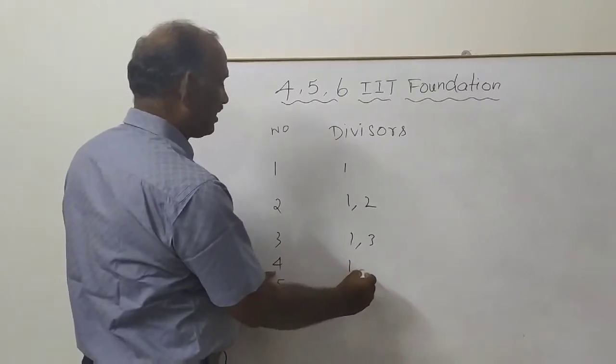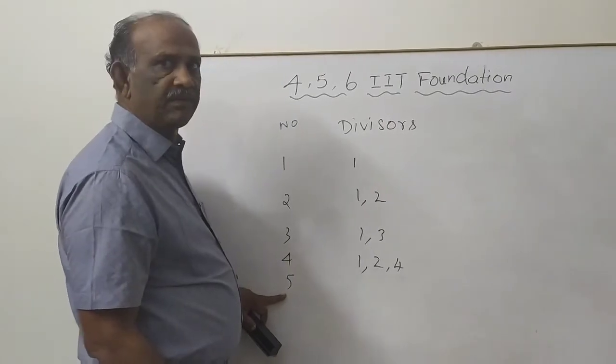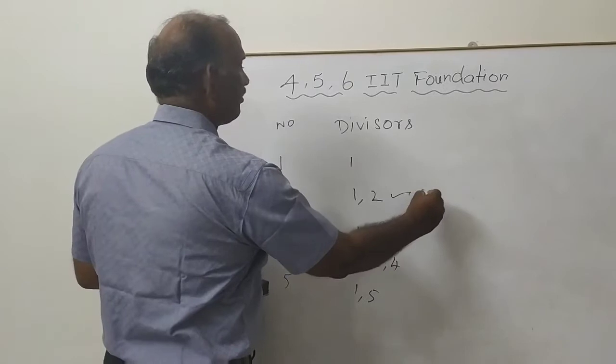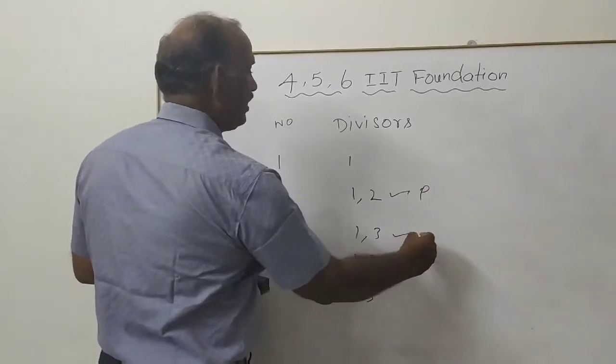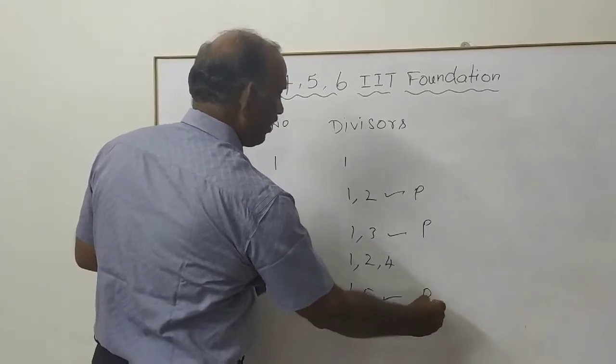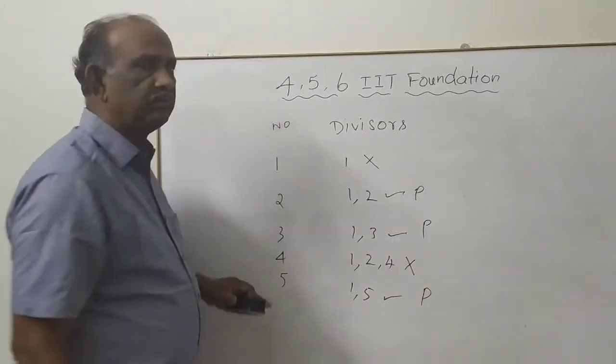1 is a divisor, we can divide by 2, we can divide by 4 also. What are the divisors of 5? 1, 5. Only 2 divisors, prime number. It is not a prime number. It is neither prime nor composite.